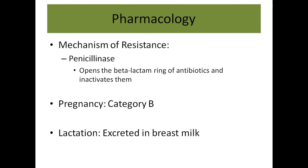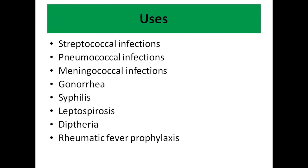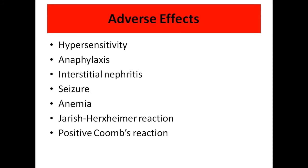These drugs fall under category B for pregnancy and are excreted in breast milk during lactation. Common uses include streptococcal, pneumococcal, and meningococcal infections, as well as gonorrhea, syphilis, leptospira, diphtheria, and rheumatic fever prophylaxis, among other uses.